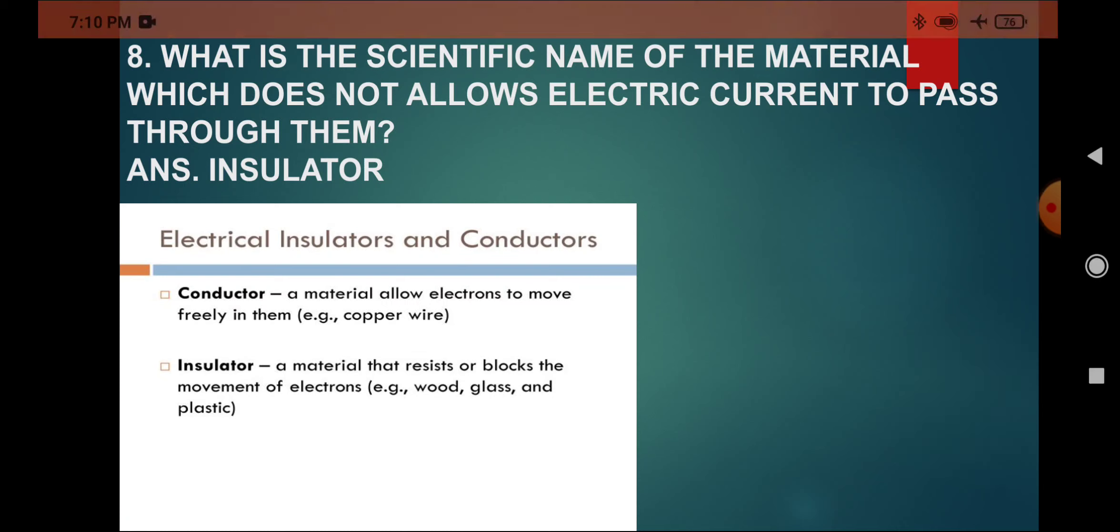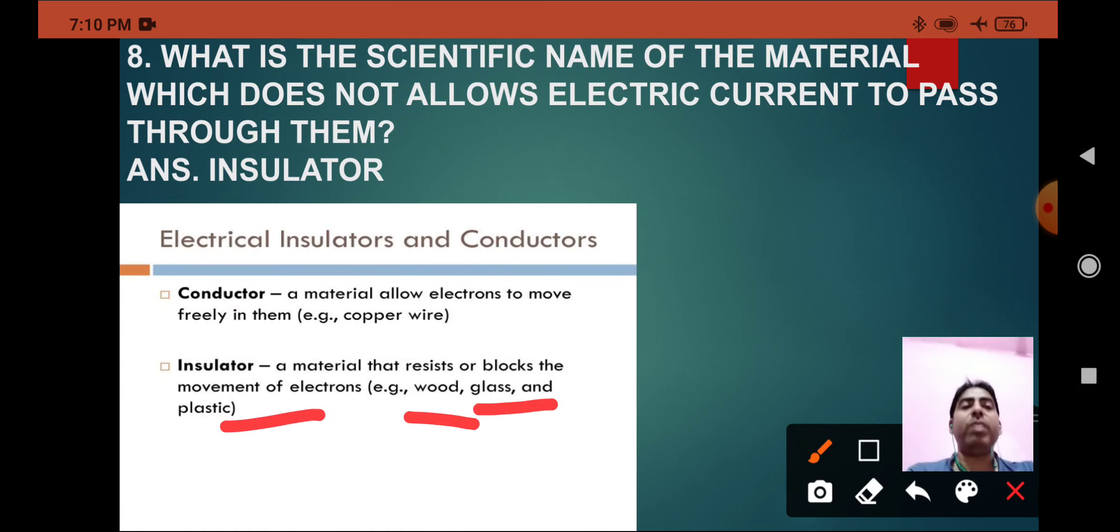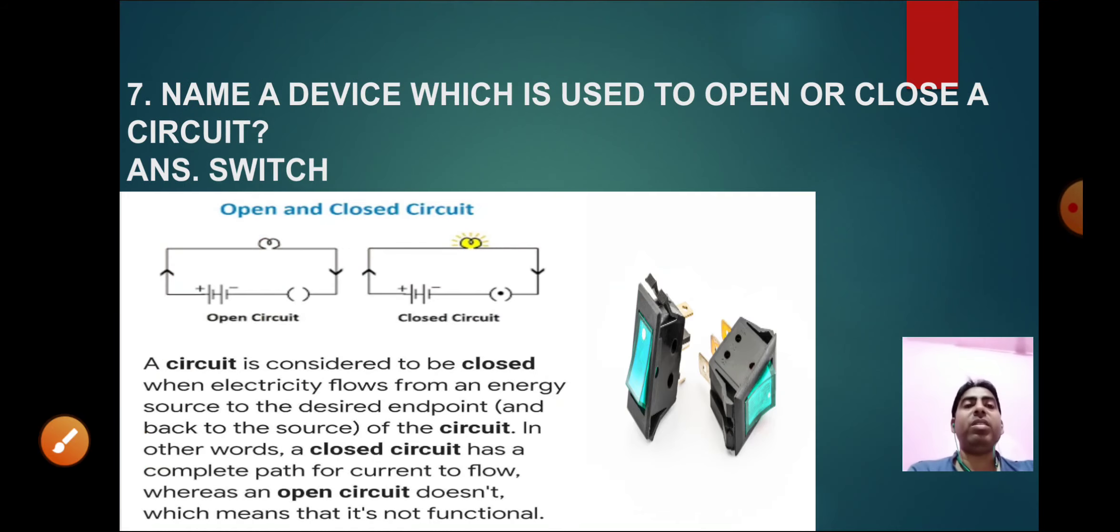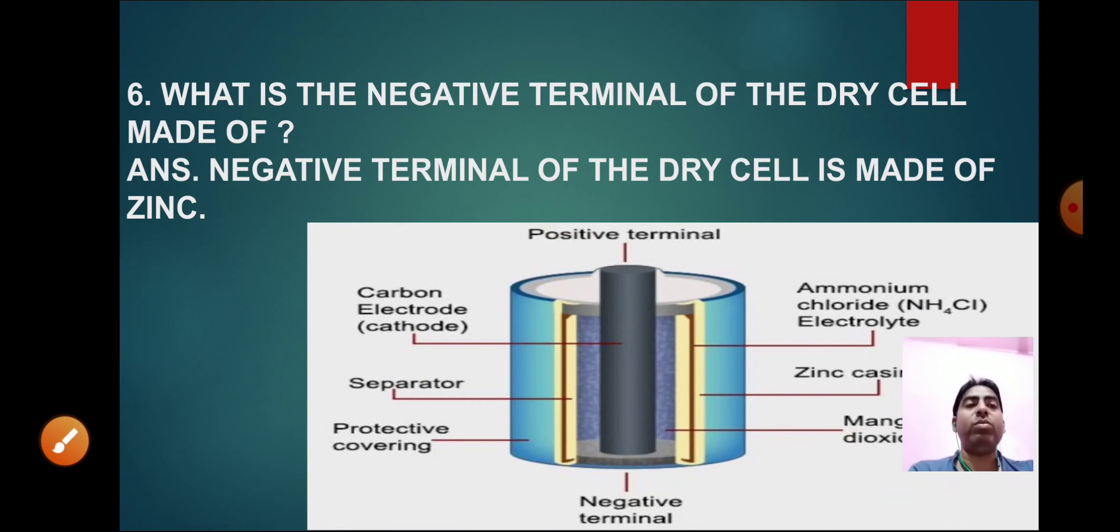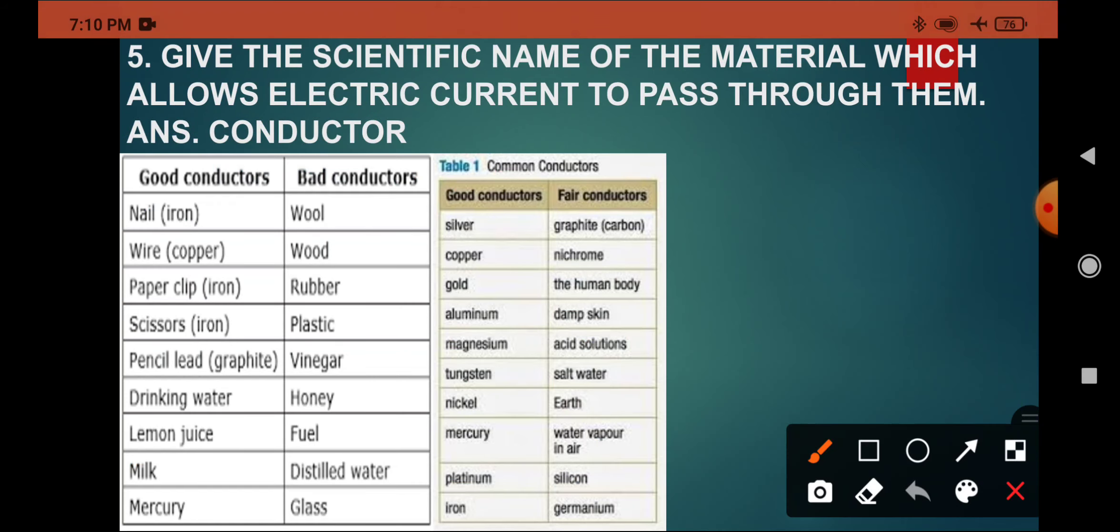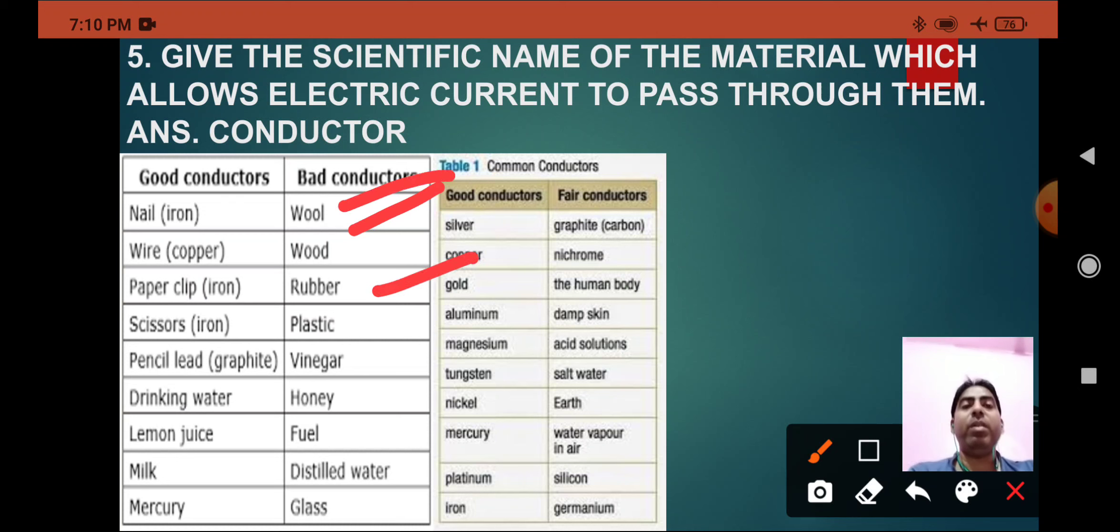The examples here are wood, glass, plastic. In the previous slide also I have shown you some insulators: wood, rubber, plastic, vinegar, honey, fuel, distilled water, glass. These are the bad conductors, that is insulators.